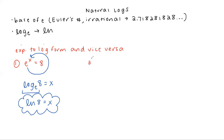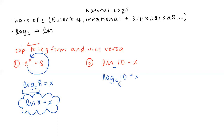Let's do an example going backwards, starting with one that is in log form. So natural log of 10 equals X. We're going to go from log to exponential form. The first thing you'd want to do is rewrite LN as log base E so you can use the loop trick. To make this exponential, you start where your arrow started — E — the power is the thing you pass next, so E to the X equals 10.